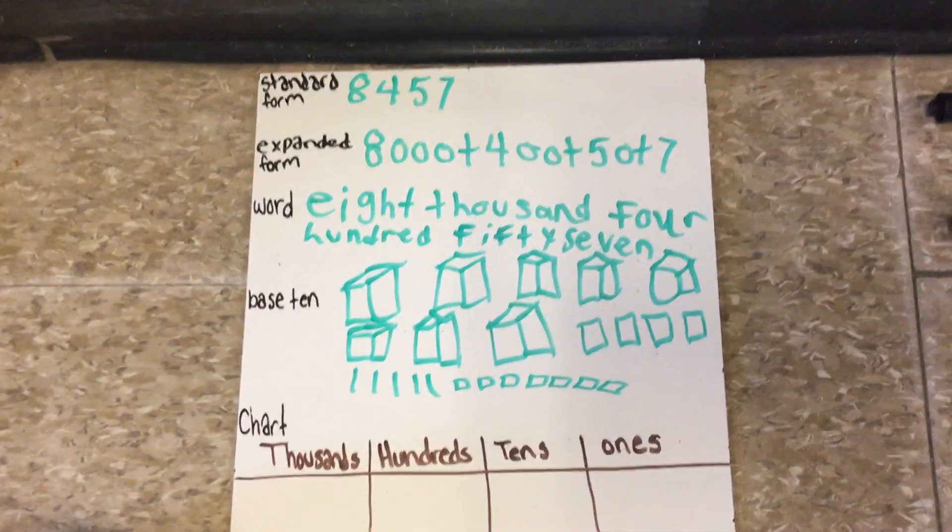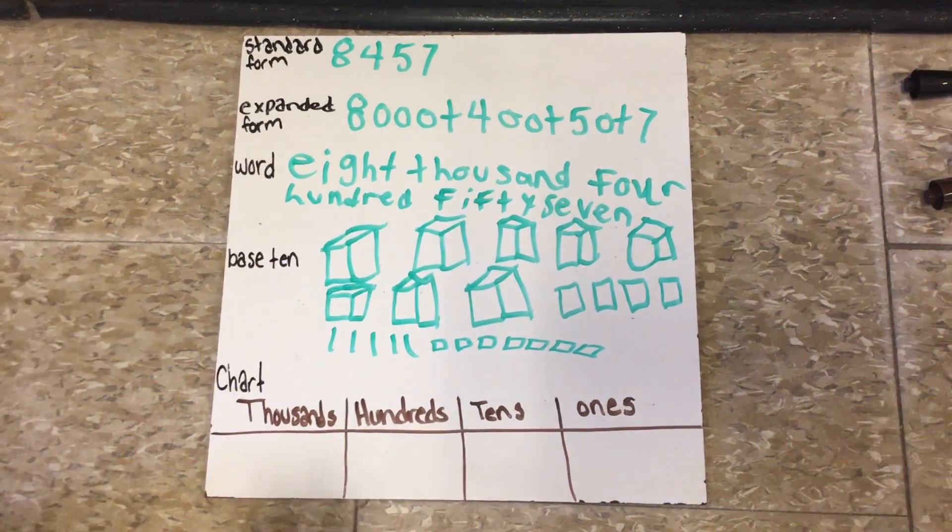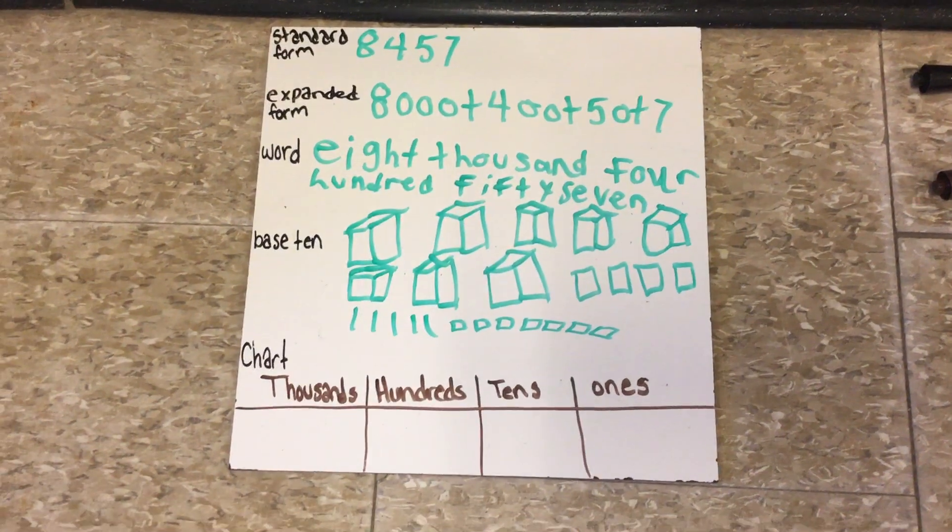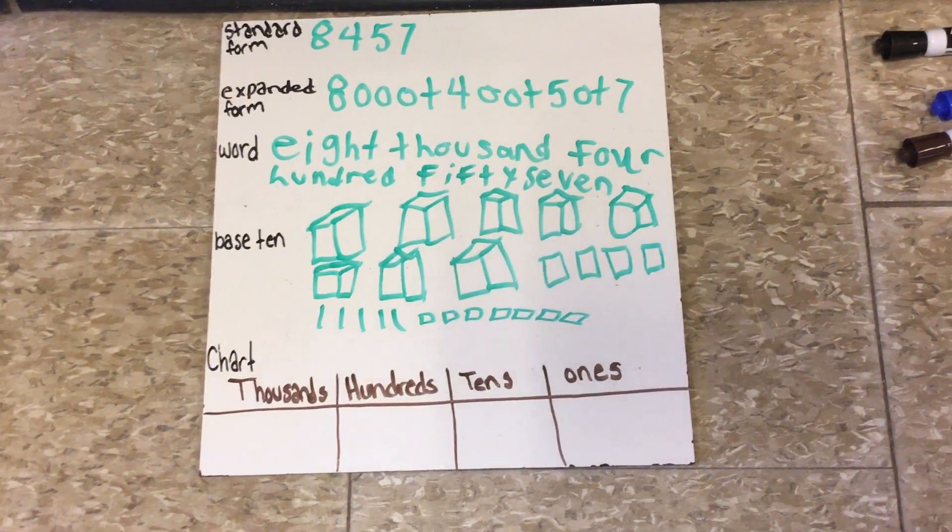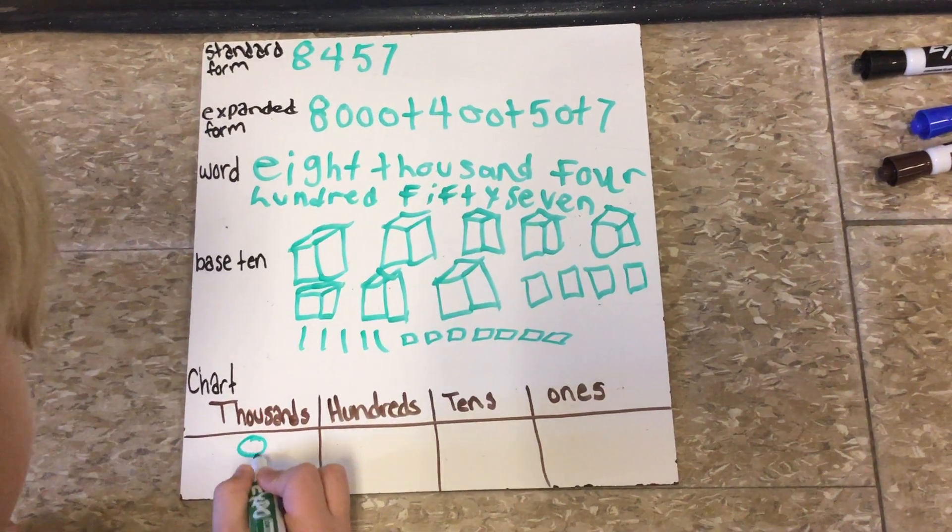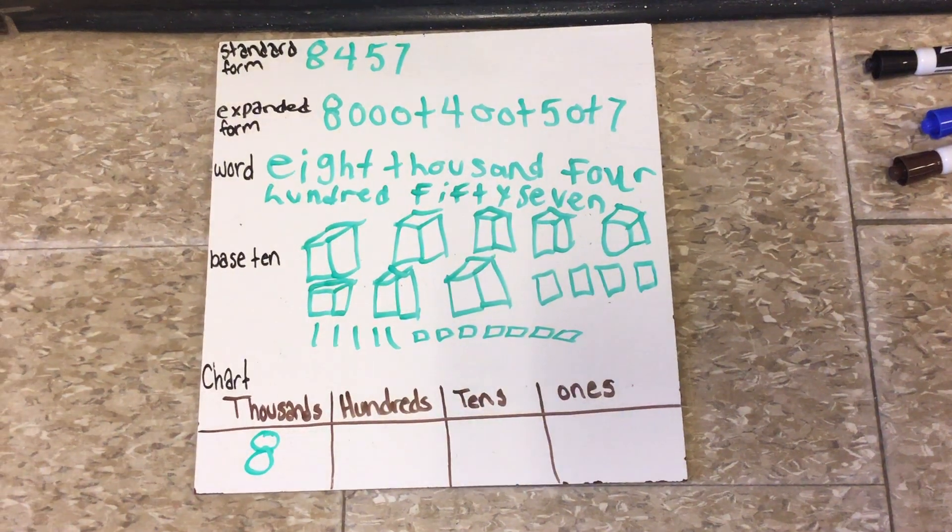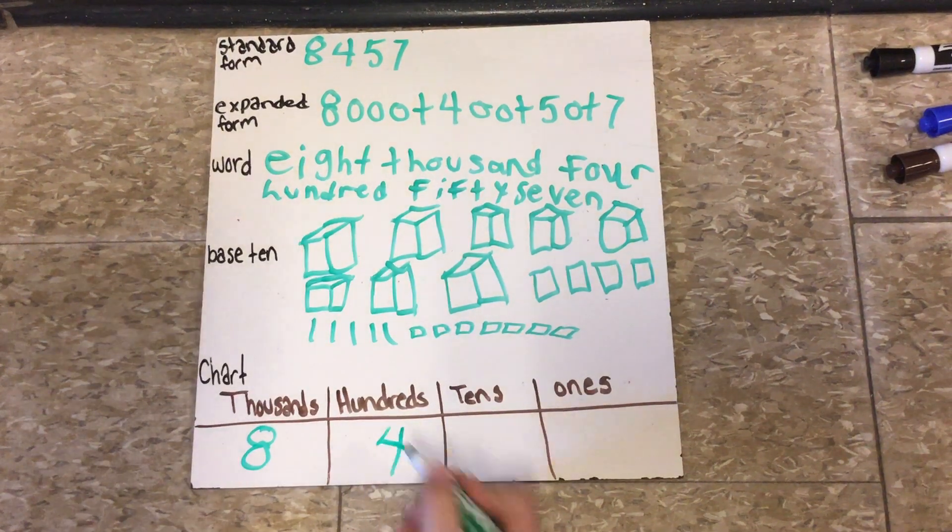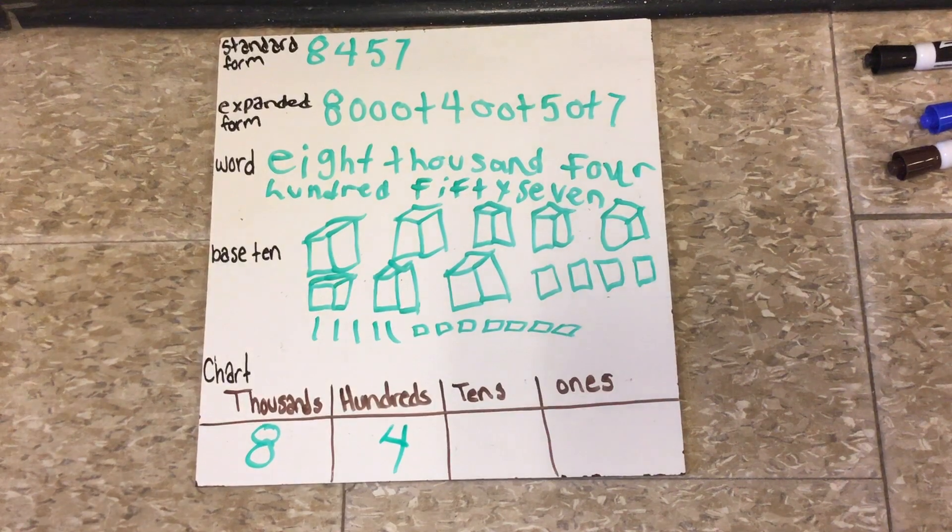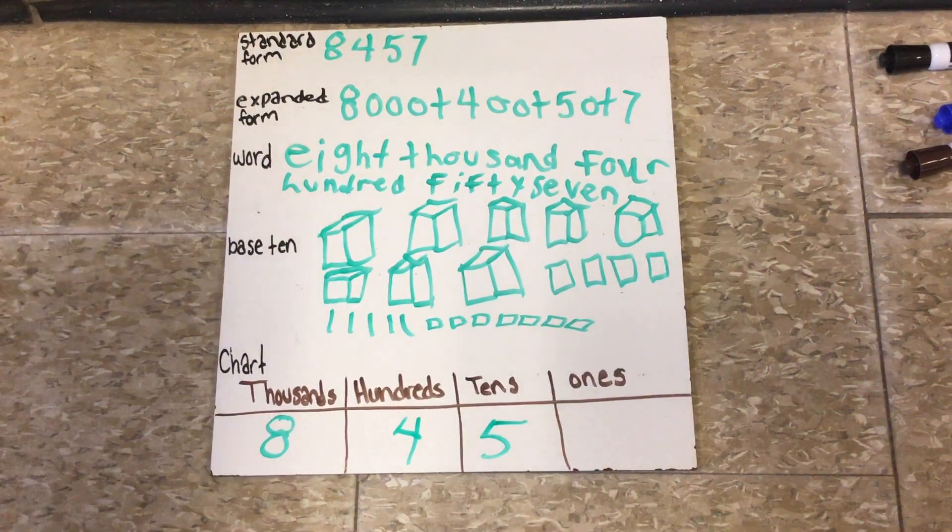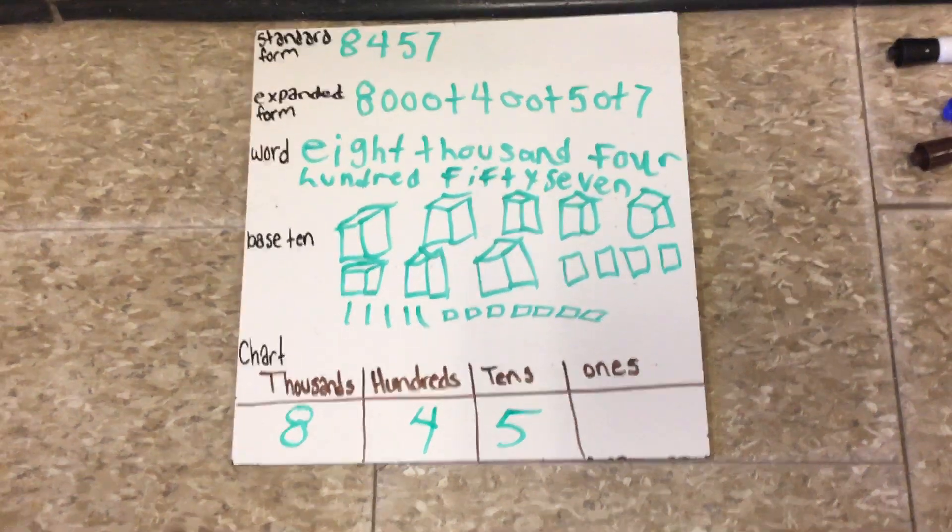And the last one is the chart. You put the 8 in the thousands column, the 4 in the hundreds column, the 5 in the tens column, and the 7 in the ones column.